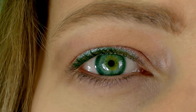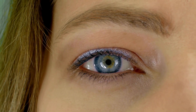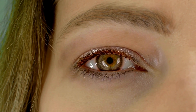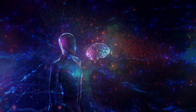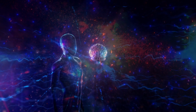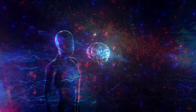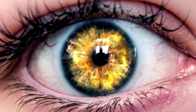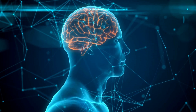Eye color is determined by the amount and type of pigments in the front part of the iris, the colored part of the eye, and by the scattering of light by the turbid medium in the stroma, the clear part of the eye. The color of the iris is determined by the presence of two pigments, melanin and lipochrome. Melanin is a brown pigment responsible for the dark color of the iris, while lipochrome is a yellow pigment. The combination of these pigments determines the final eye color.